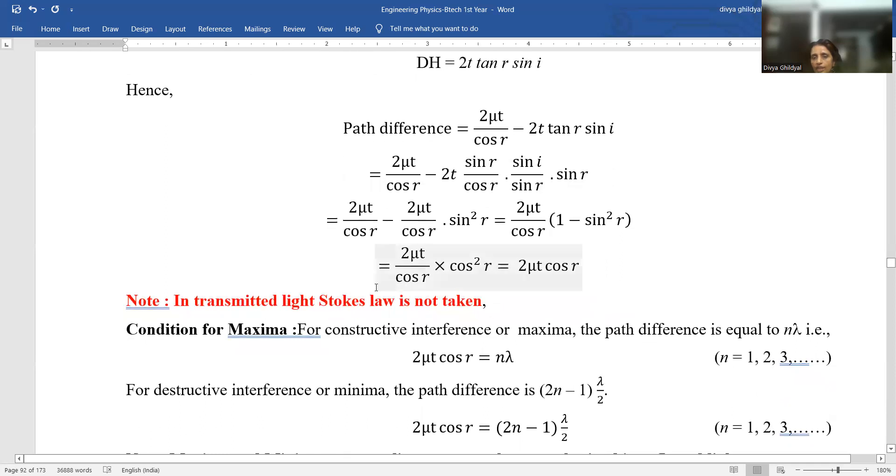We will not take Stokes law in this case. Once again condition for maxima is an even multiple of path difference and for destructive interference 2 N plus minus 1 lambda by 2 for N equal to 0, 1, 2, 3 and N equal to 1, 2, 3.